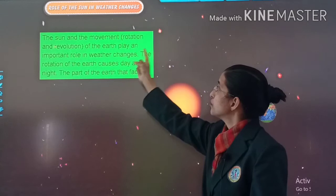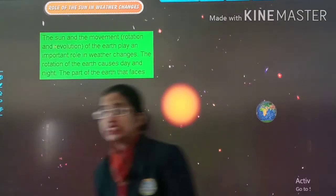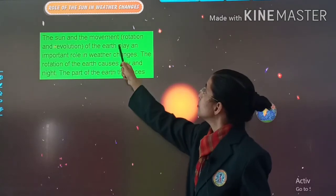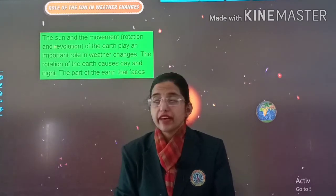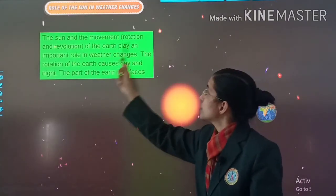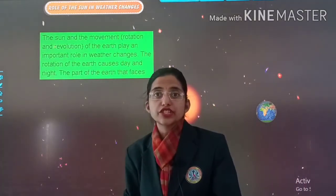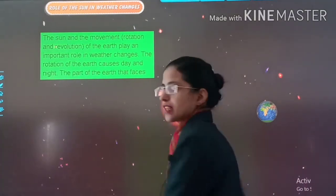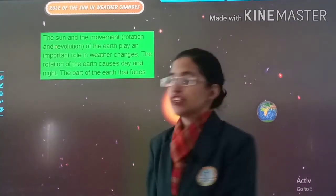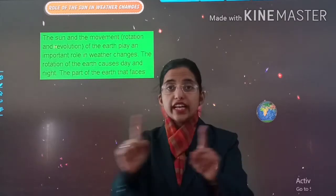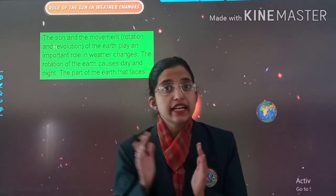The sun and the movement of the earth play an important role in weather. The rotation of the earth causes day and night. What is rotation? Rotation is spinning in the same place — apni hi jagah par ghoomna — that is called rotation. The earth rotates, and because of that we have day and night.